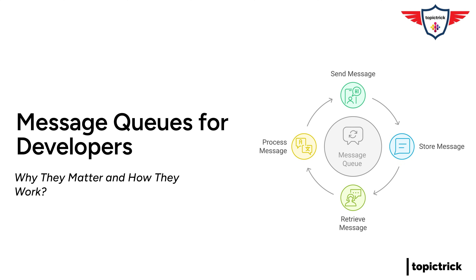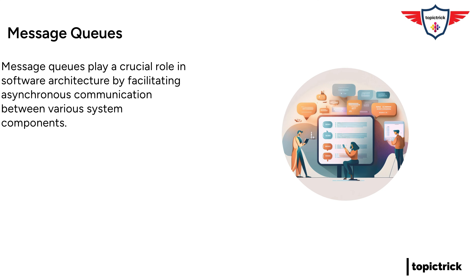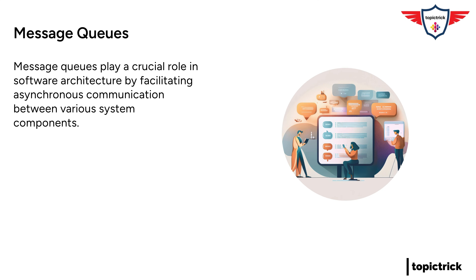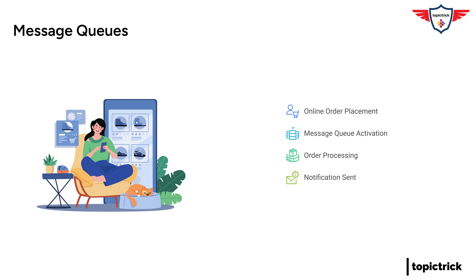Hey everyone and welcome to the Deep Dive. Today we're diving into something that's like the secret sauce behind so many of the apps and systems we use every single day, and that is message queues. When you order something online, you don't have to sit there and wait for it to ship before you can do anything else on your phone. You can just keep browsing or close the app. That's because of something called asynchronous communication, and that's where message queues really come in.